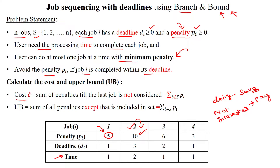The branch and bound technique uses two constraints: cost and upper bound. The cost is calculated as the sum of penalties of all jobs not yet considered up to the last job. That means the summation of penalty amounts which do not belong to the selected jobs for processing.